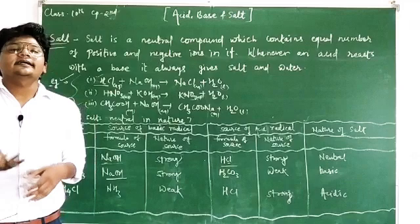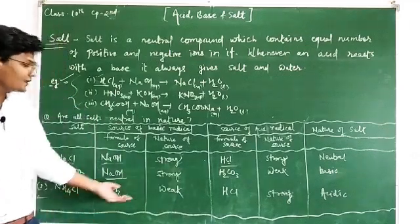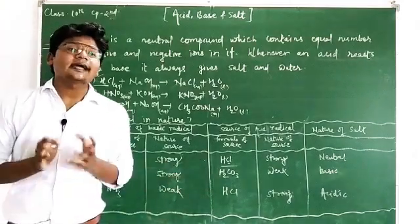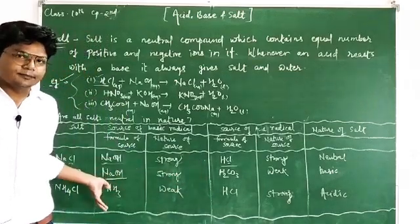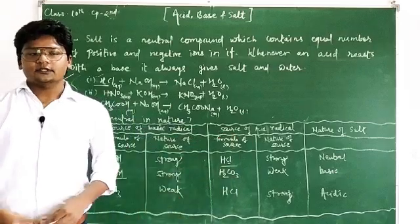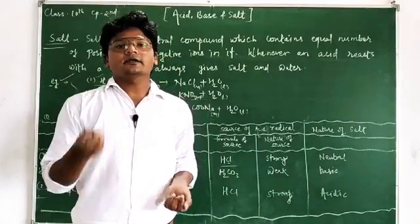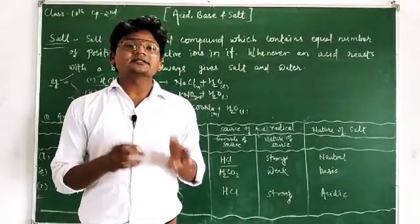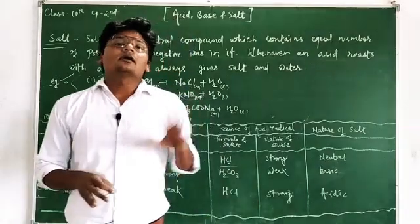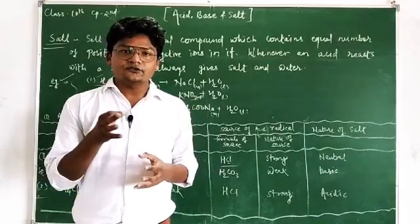The next example is ammonium chloride. It is made from the reaction of ammonia with hydrochloric acid. Ammonia is a weak base and HCl is a strong acid. When the acid is strong and the base is weak, the salt will be acidic in nature. There are more examples in your book — you can practice them to identify which salts are acidic and which are basic. So a salt is basically a neutral compound, but it can be acidic or basic as well.